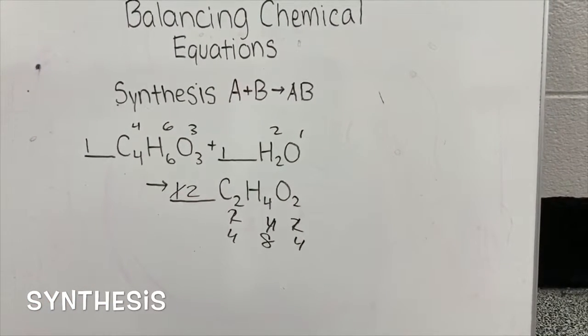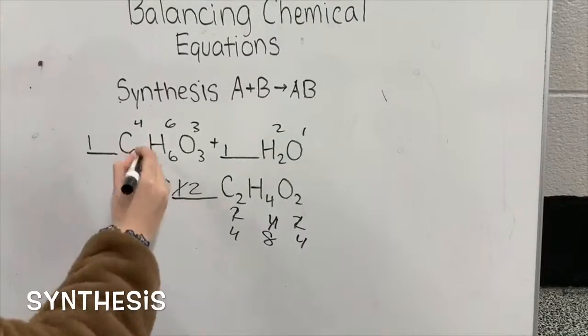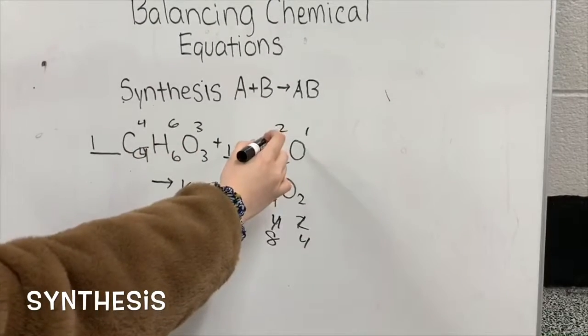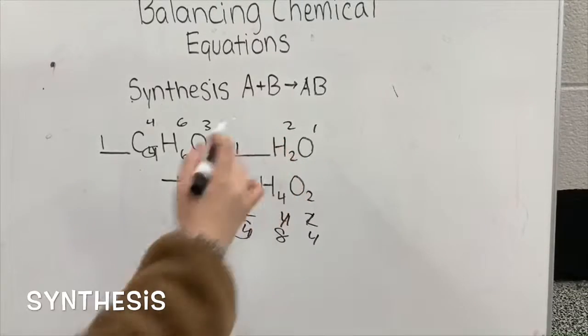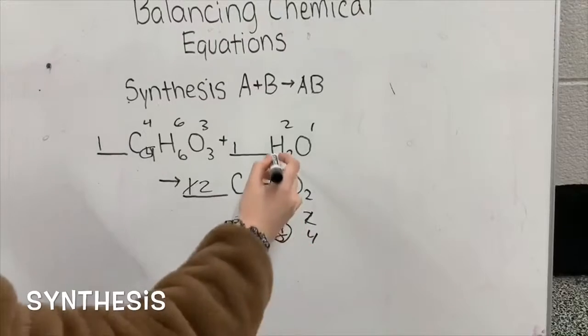Now we will check if it's balanced. C should be balanced because each side has four carbons. Now, if we add the six hydrogen and the two hydrogen together on the reactant side, it will create eight hydrogen, which we have on both sides.